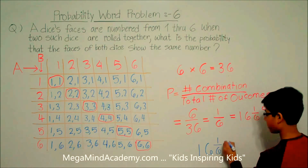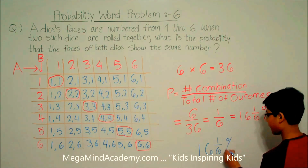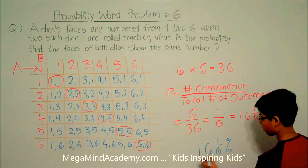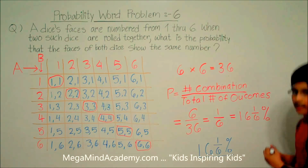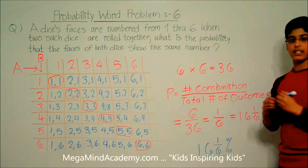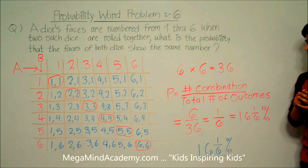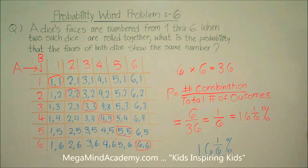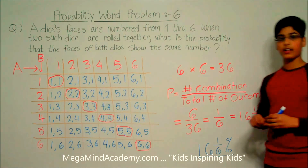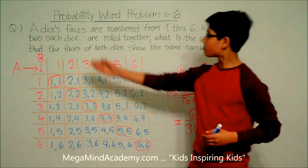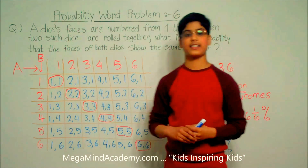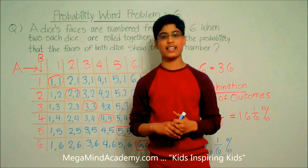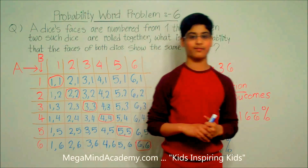So this means that only 16 and one-sixth percent of the outcomes show both dice having the same number. Today we learned about probability word problems. Thank you for watching this video.